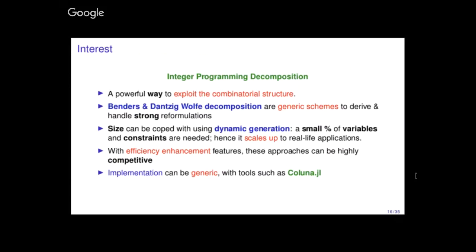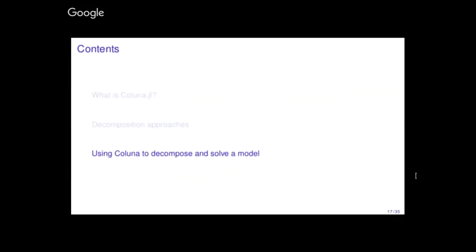Why would you use decomposition approaches? First, you can explore the structure of a problem. These reformulations can be done through generic schemes like Benders and Dantzig-Wolfe. The size, which a priori seems like a problem, is actually not the hardest issue because you generate dynamically only the entities you need. These algorithms are not simple to implement — a PhD student might spend a whole PhD implementing a branch-and-price. So we are here to provide a generic implementation for this kind of specialized branch-and-price.